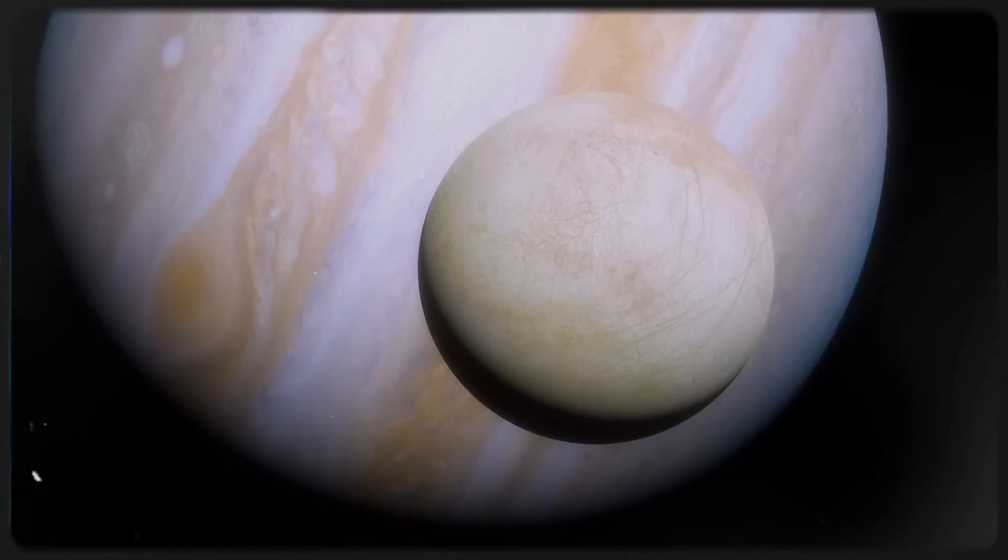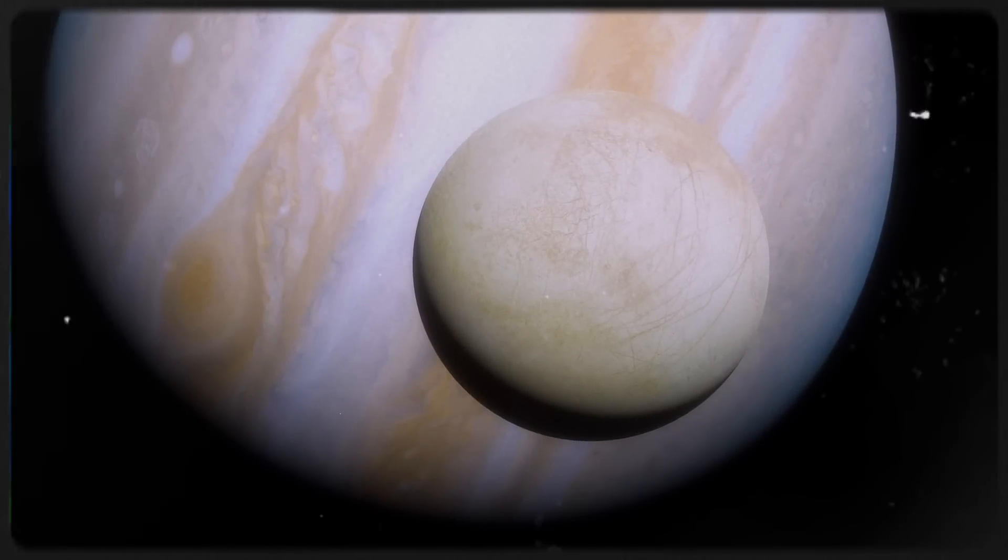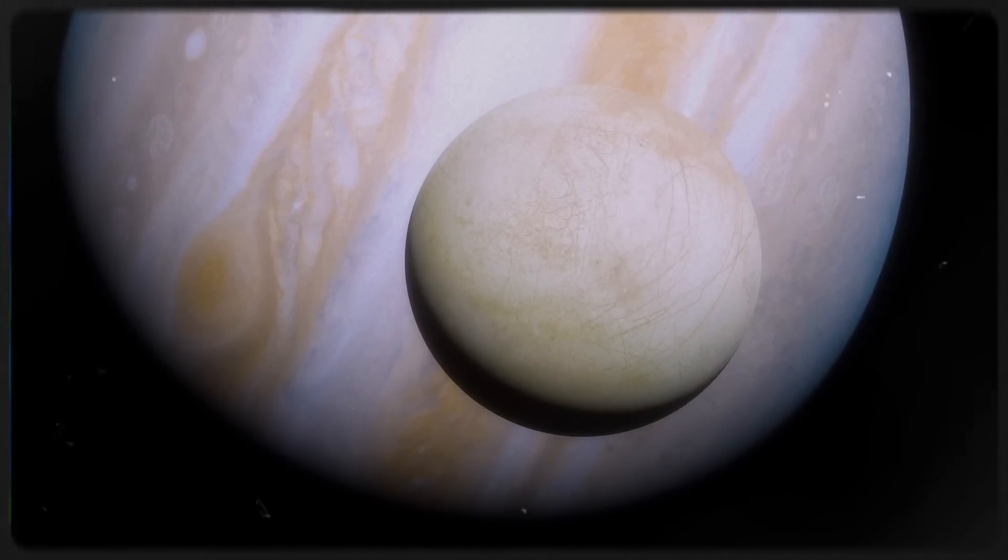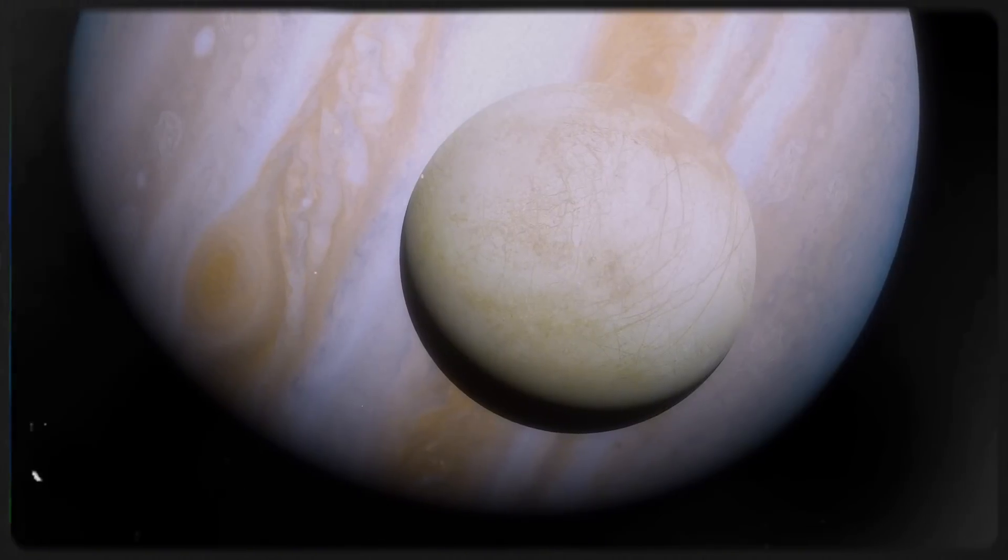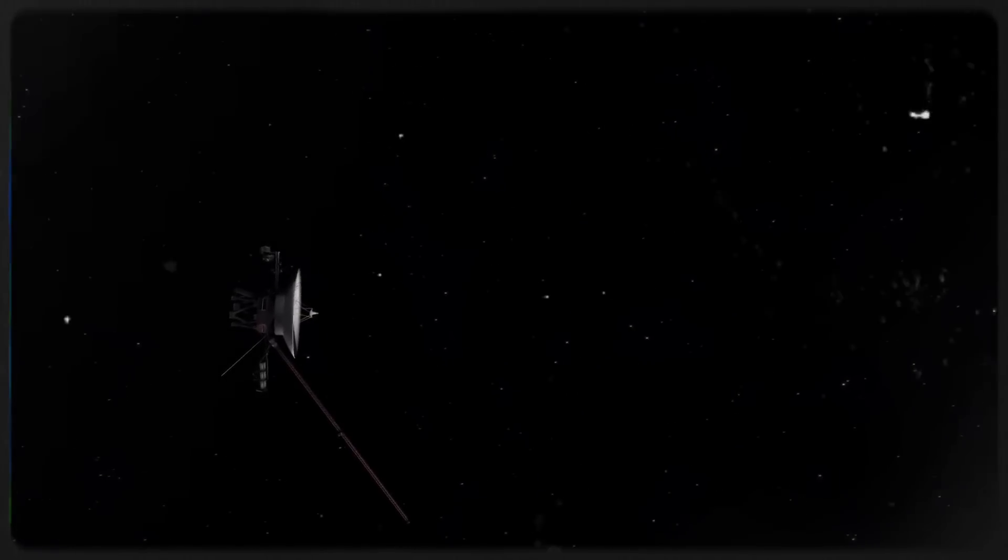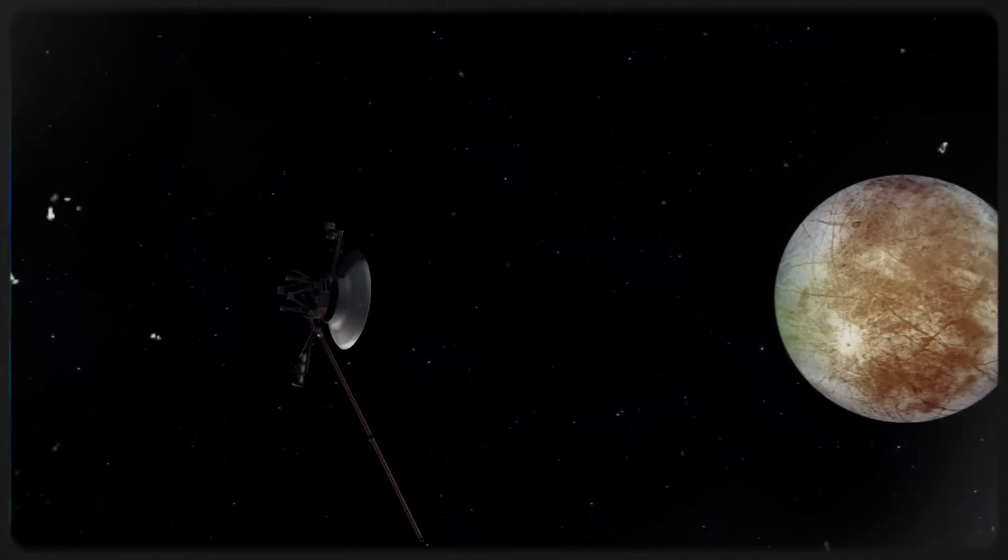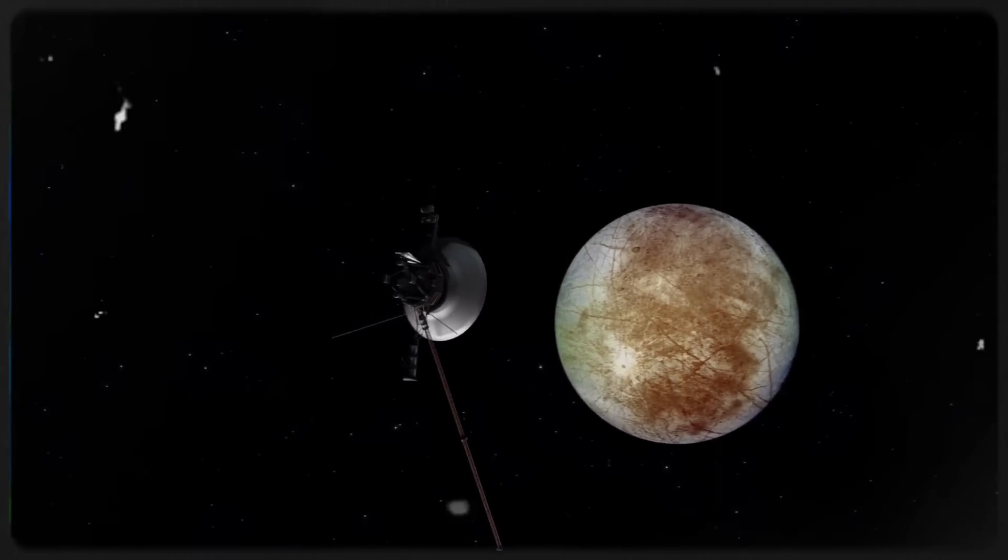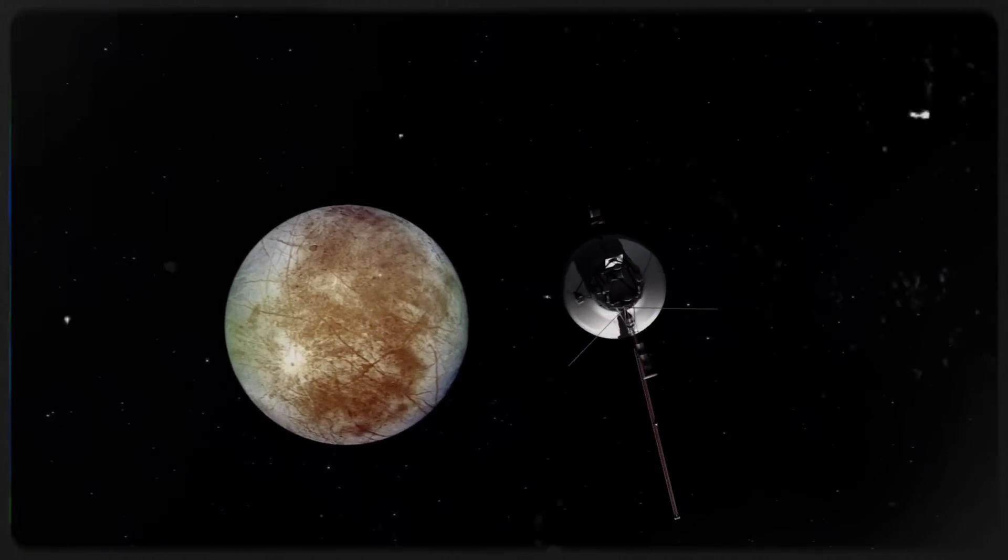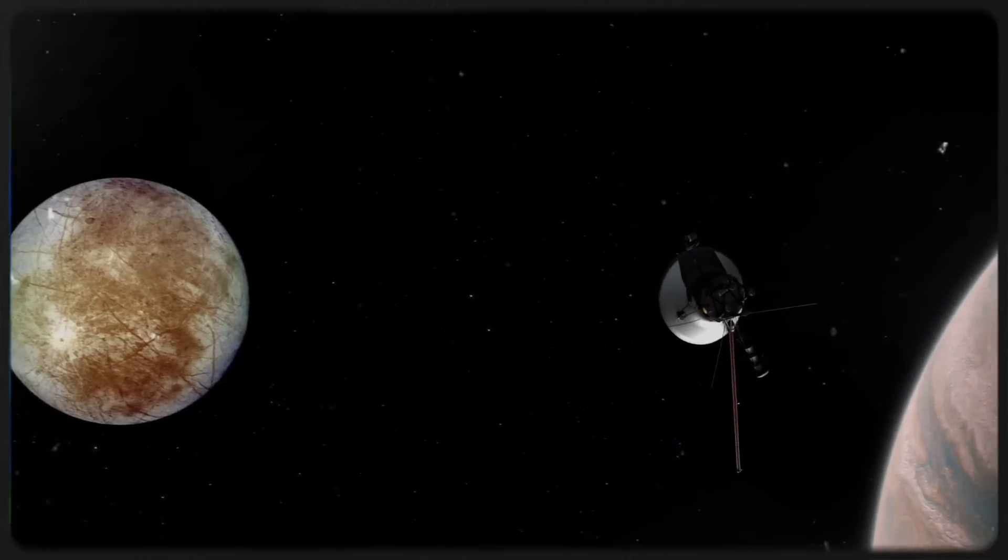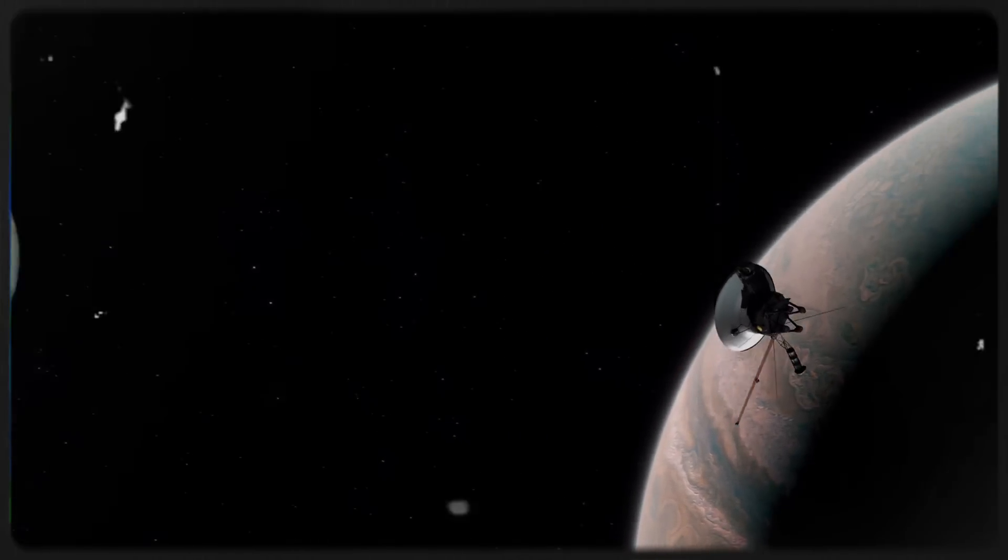The telescope made a groundbreaking discovery on Jupiter's moon Europa, detecting carbon dioxide on its frozen surface. Scientists believe this carbon dioxide likely originates from a vast subsurface ocean beneath the moon's icy crust, potentially providing critical insights into Europa's habitability and the possibility of extraterrestrial life.